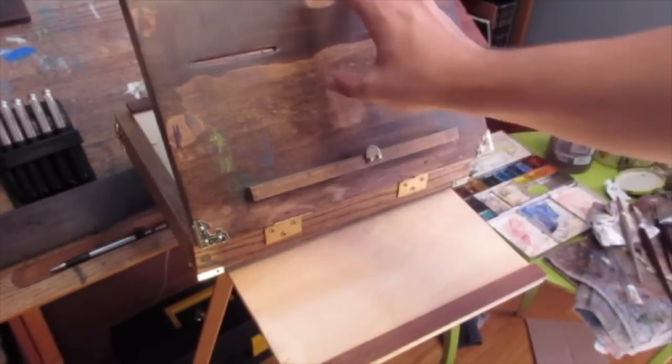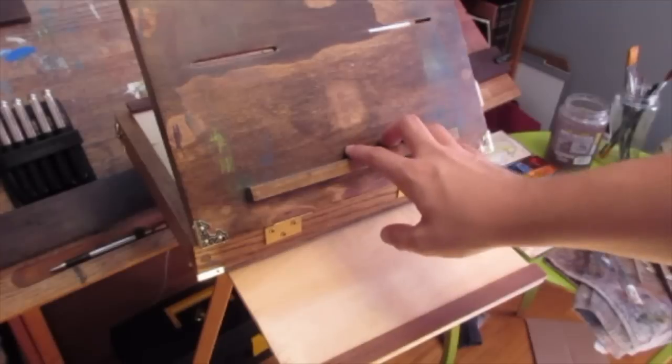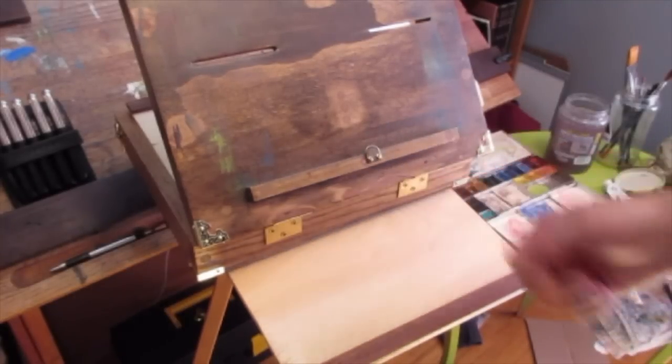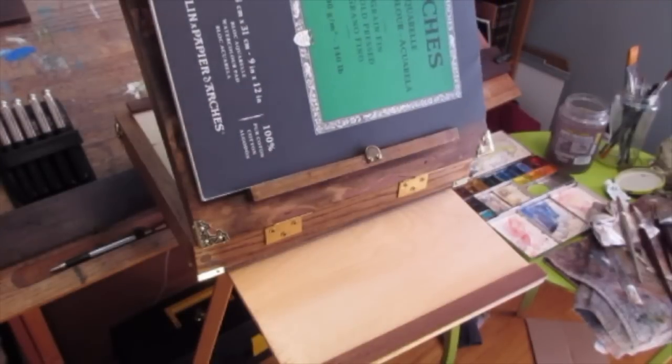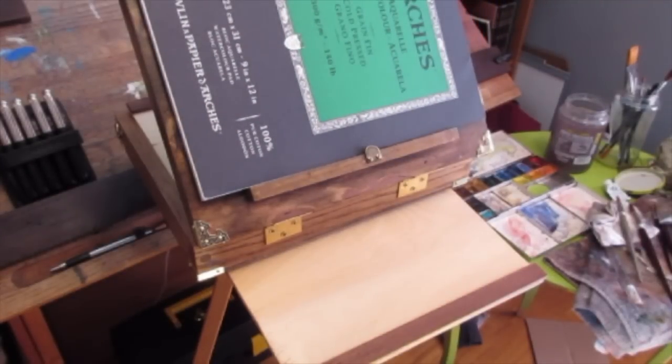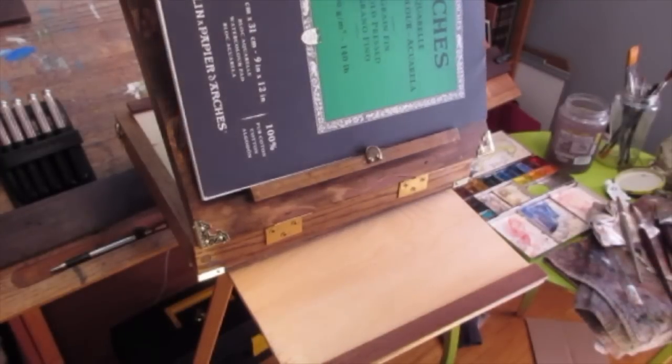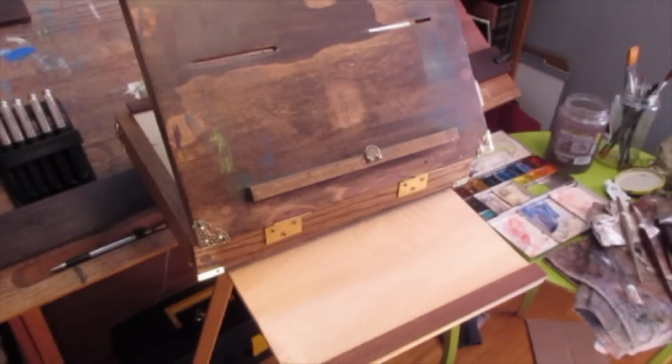I cut the slots on this one for the bungee cord idea if I'm working in oil and I want a smaller canvas or thing or board to work on. But I mainly use this for blocks of Arches or sheets of Arches that I can just tape to it. The biggest mistake I made with this one was I made it with red oak and so it's a little bit heavy.